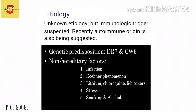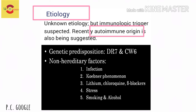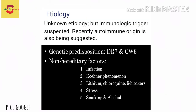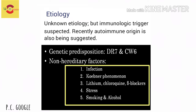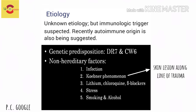An immunological trigger is usually suspected, and recently an autoimmune origin has also been associated with psoriasis. The genetic predisposition is associated with the genes DR7 and CW6.